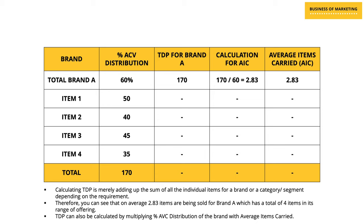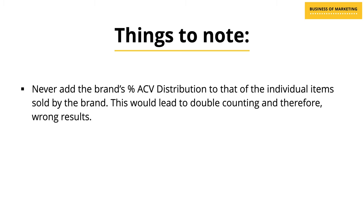What this means is that out of the four different items comprising brand A, the average number of items being carried in the market or sold by different retailers is 2.83. Therefore, what this brand needs to focus on is how it can increase the number of items carried by different retail stores if it wants to increase its distribution depth further. One important thing to always remember in this calculation: never add the brand's percentage ACV to the percentage ACV of the individual items the brand is selling, as that would lead to double counting and therefore wrong results.